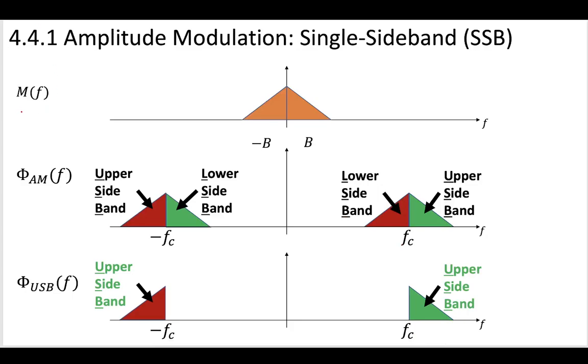So what that looks like is we have our message, we modulate our message, and we can see that our message contains upper and lower sidebands, and somehow we want to go from the double sidebands to this single sideband case.